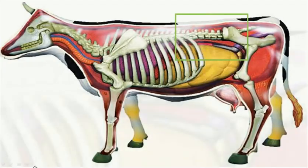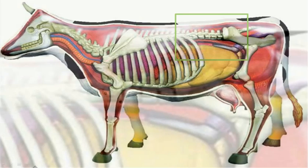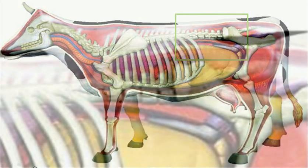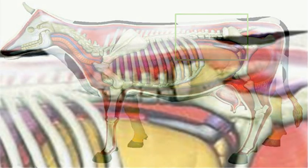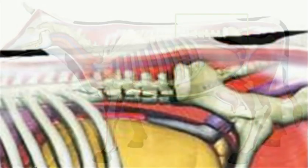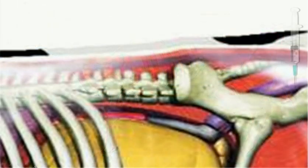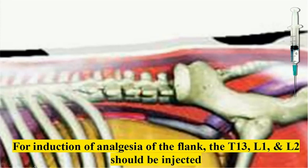Induction of paravertebral analgesia in large ruminants requires blocking of three main nerves: the last thoracic T13, the first lumbar L1, and the second lumbar L2.